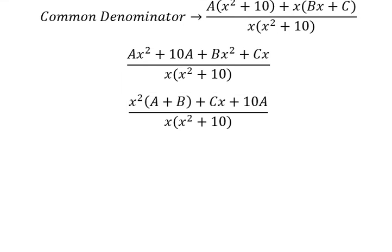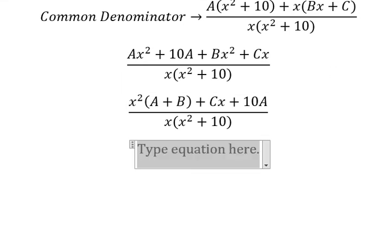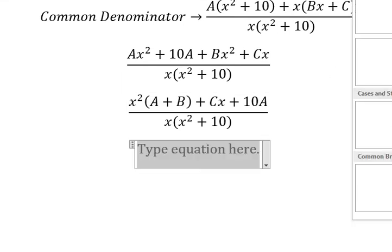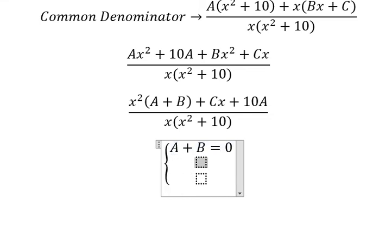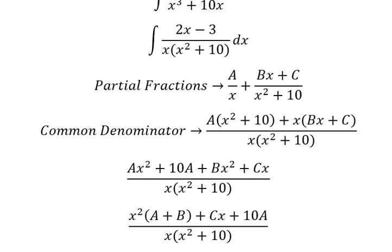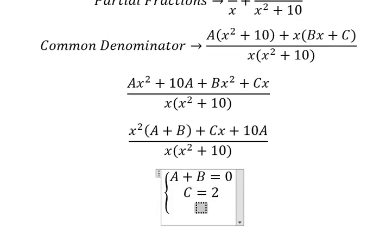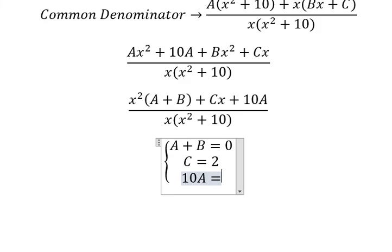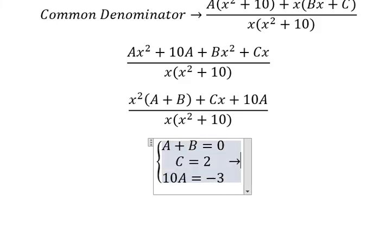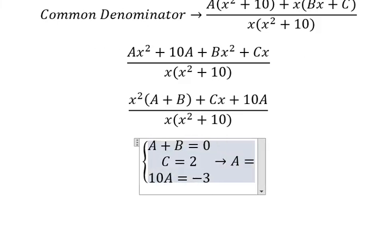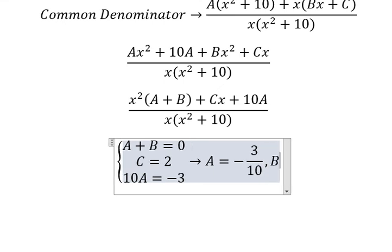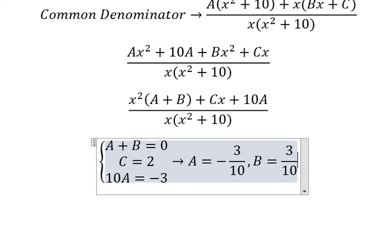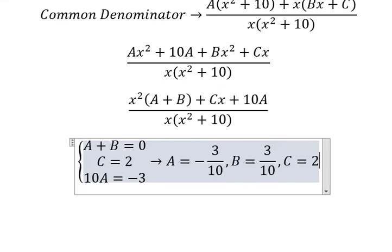Now we create the system of equations. We have A equals negative 3 over 10, B equals 3 over 10, C equals 2.